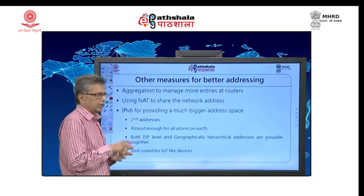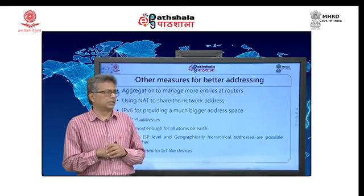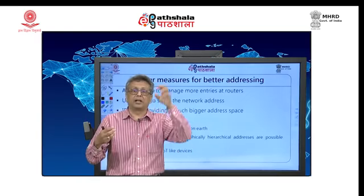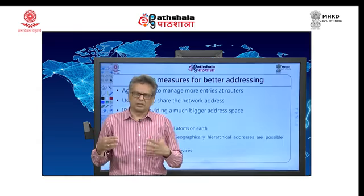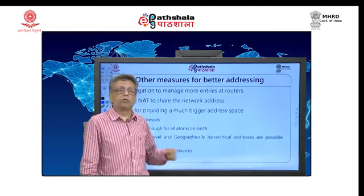There are a few other measures taken, especially in routing. We have already seen aggregation earlier and will return to it. There is also network address translation (NAT). The best solution is IPv6: with 2^128 addresses, it is extremely large — almost every atom on earth could be given an address. Not only that, it is also hierarchical, so addresses can be ISP-based and even location-based. There are many advantages of using IPv6, and it is very well suited for IoT devices.